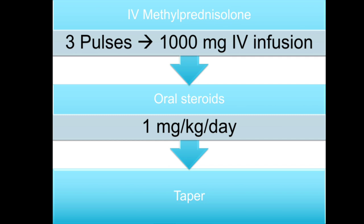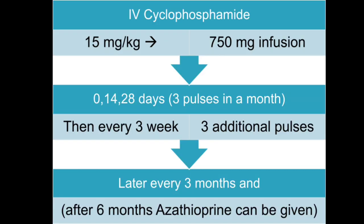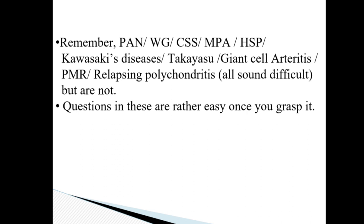Treatment: IV methylprednisolone 3 pulses of 1000 mg IV infusion, followed by oral steroids 1 mg/kg/day, then taper. Cyclophosphamide: approximately 15 mg/kg — so in a 50 kg patient, 750 mg — given as 3 pulses at 0, 14, and 28 days, then every 3 weeks for 3 additional pulses, later every 3 months. After 6 months of cyclophosphamide, switch over to azathioprine. Rituximab can also be used. Remember: PAN, Wegener's, Churg-Strauss, MPA, Henoch-Schönlein, Kawasaki, Takayasu, giant cell arteritis, polymyalgia rheumatica, and relapsing polychondritis all sound difficult but are not. Questions on these topics are generally rather easy once you grasp them.